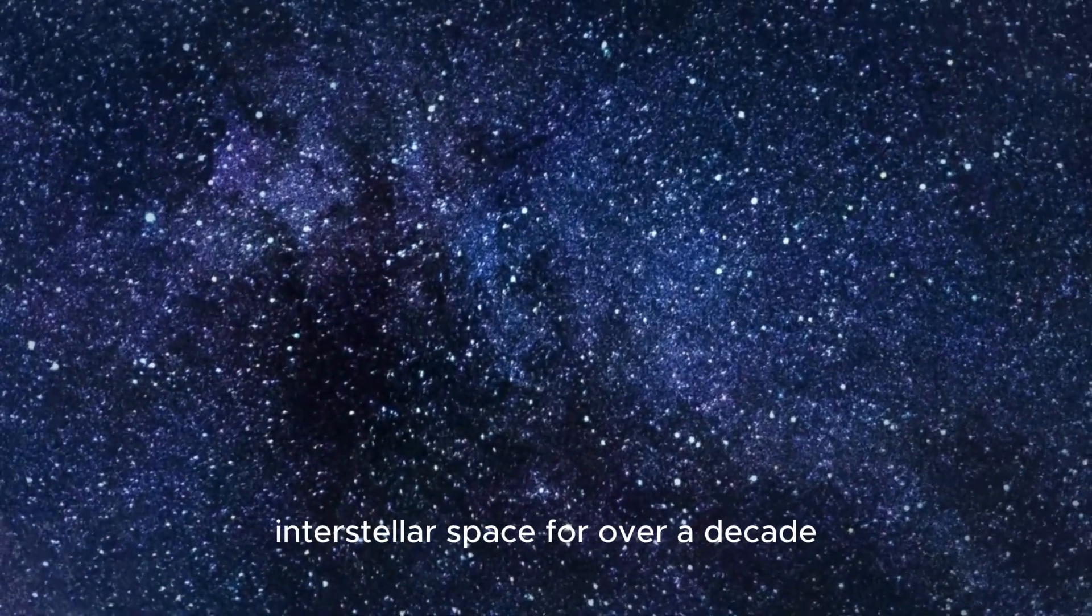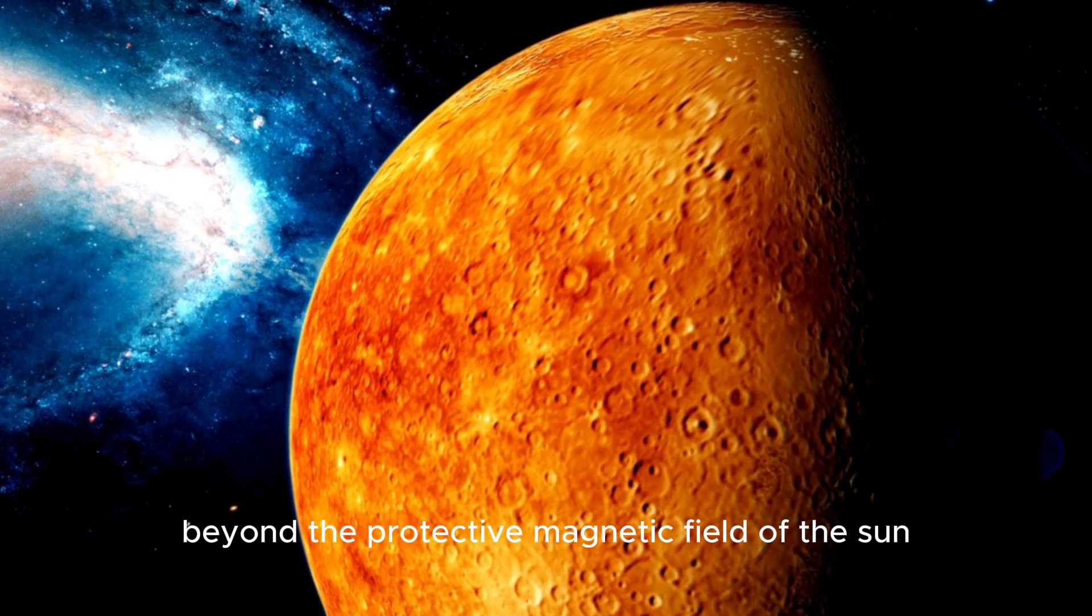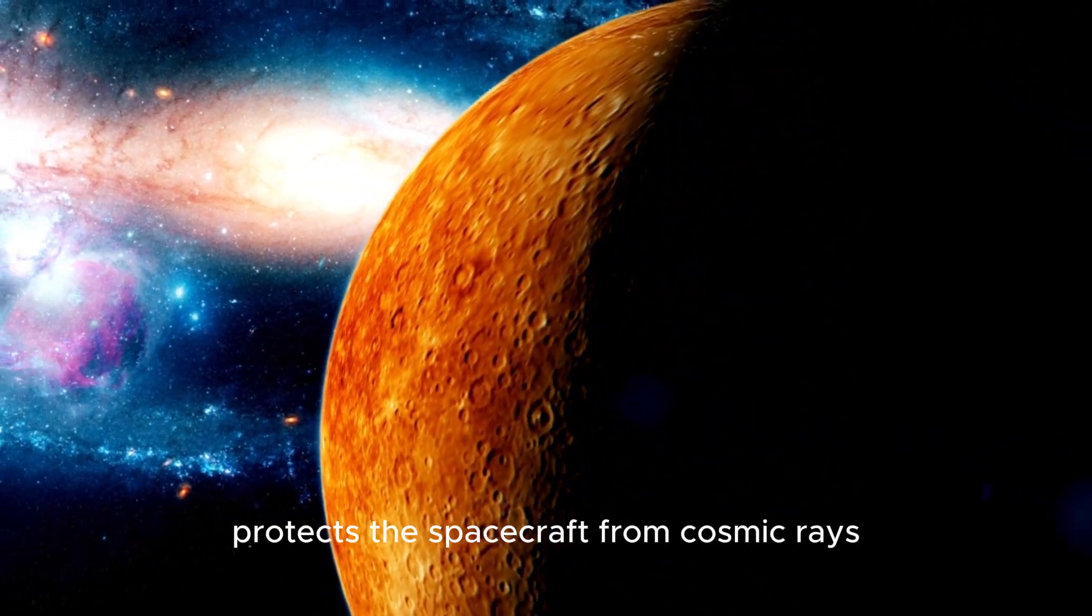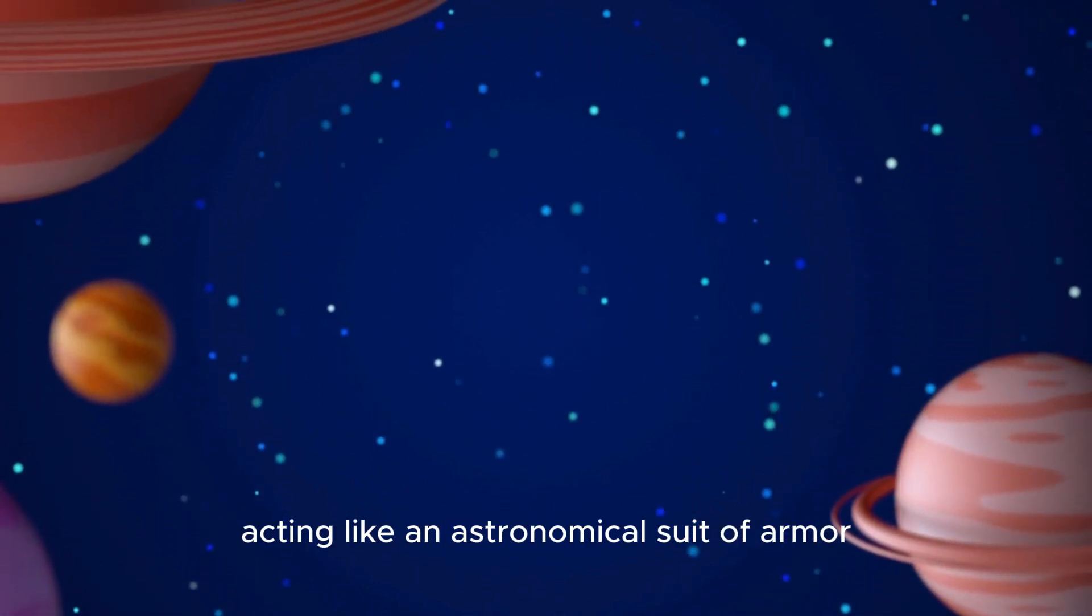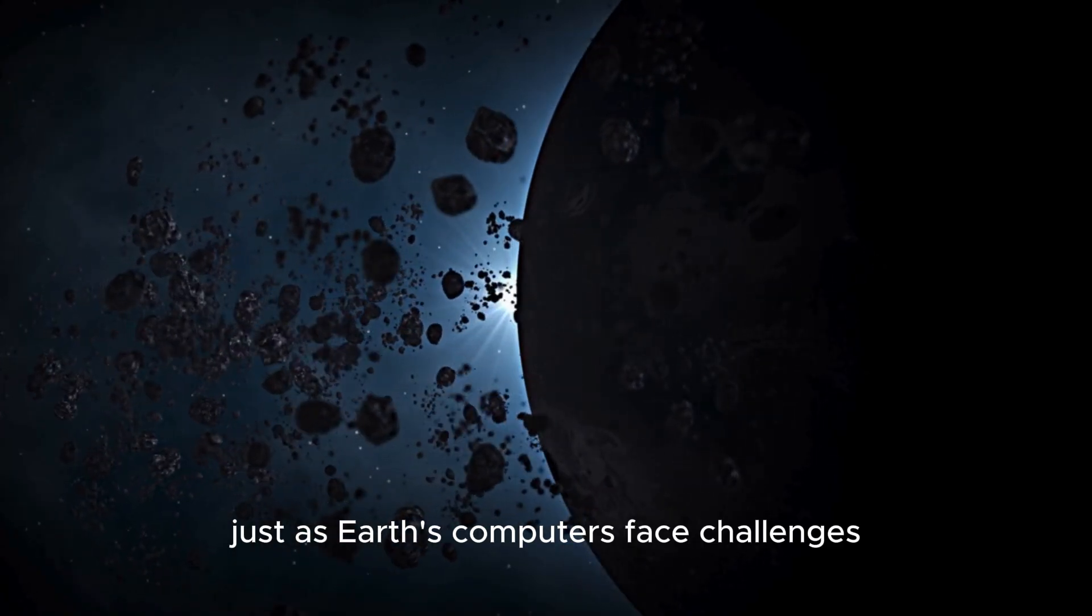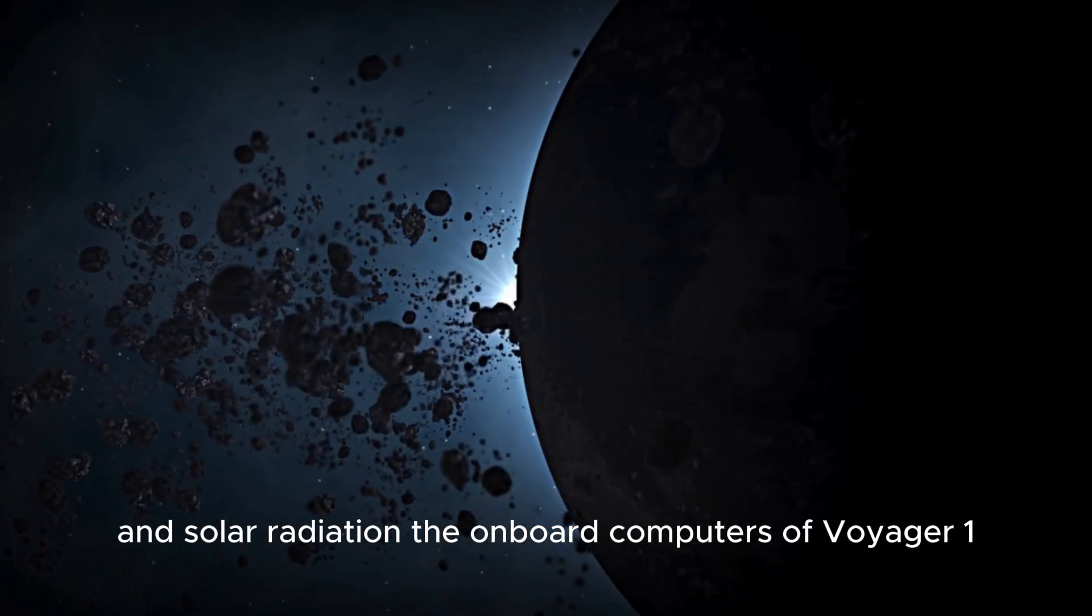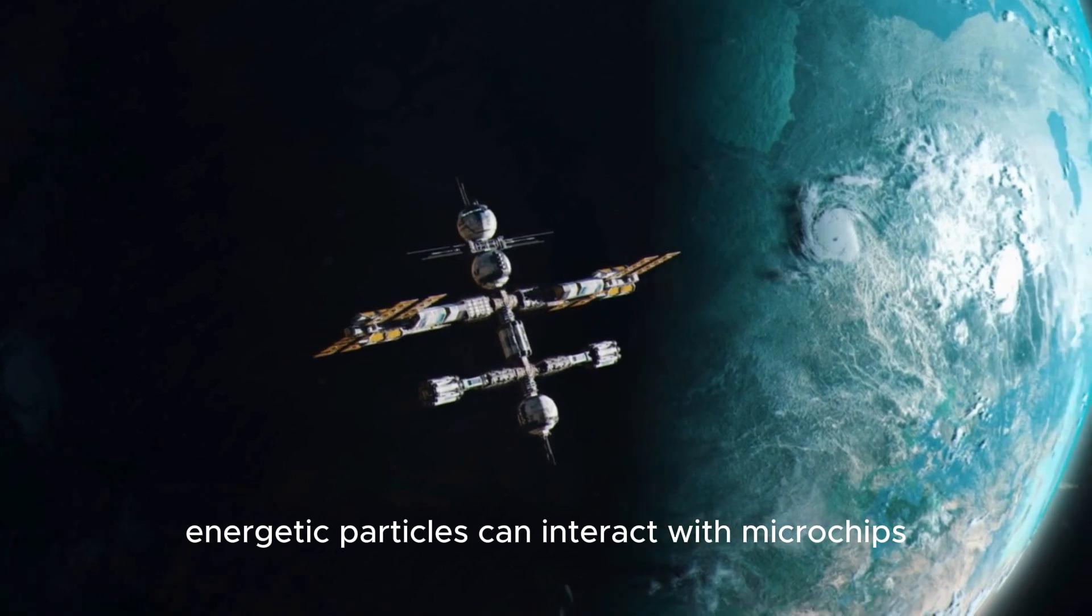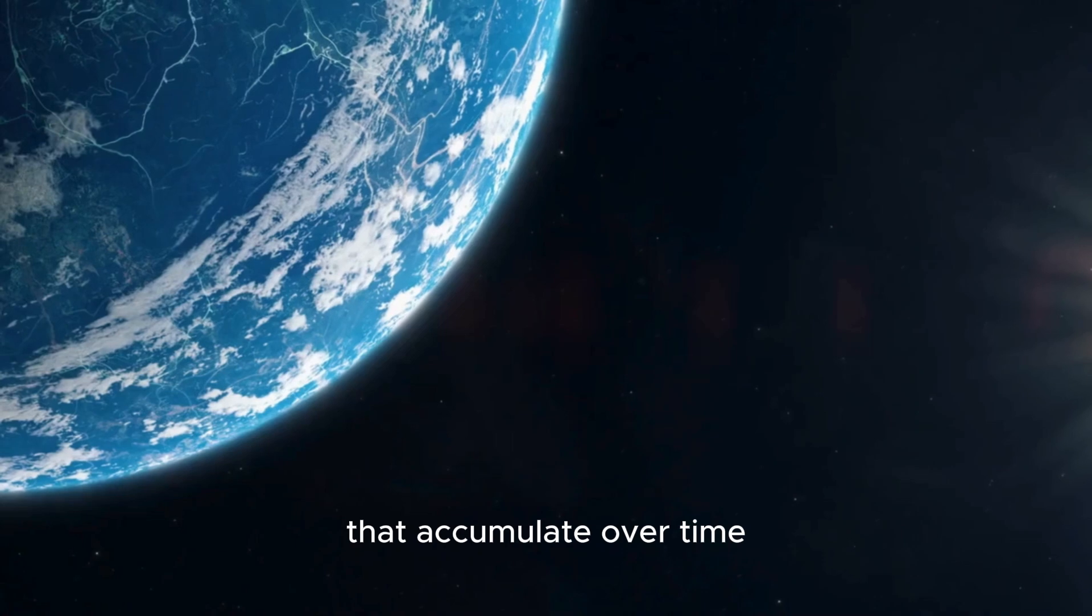Voyager 1 has been exploring interstellar space for over a decade, beyond the protective magnetic field of the Sun. This magnetic shield, akin to Earth's magnetic field, protects the spacecraft from cosmic rays and other space radiation, acting like an astronomical suit of armor. In terms of technology, just as Earth's computers face challenges from high-energy particles and solar radiation, the onboard computers of Voyager 1 are also subject to cosmic obstacles. Occasionally, energetic particles can interact with microchips, leading to minor memory errors that accumulate over time.